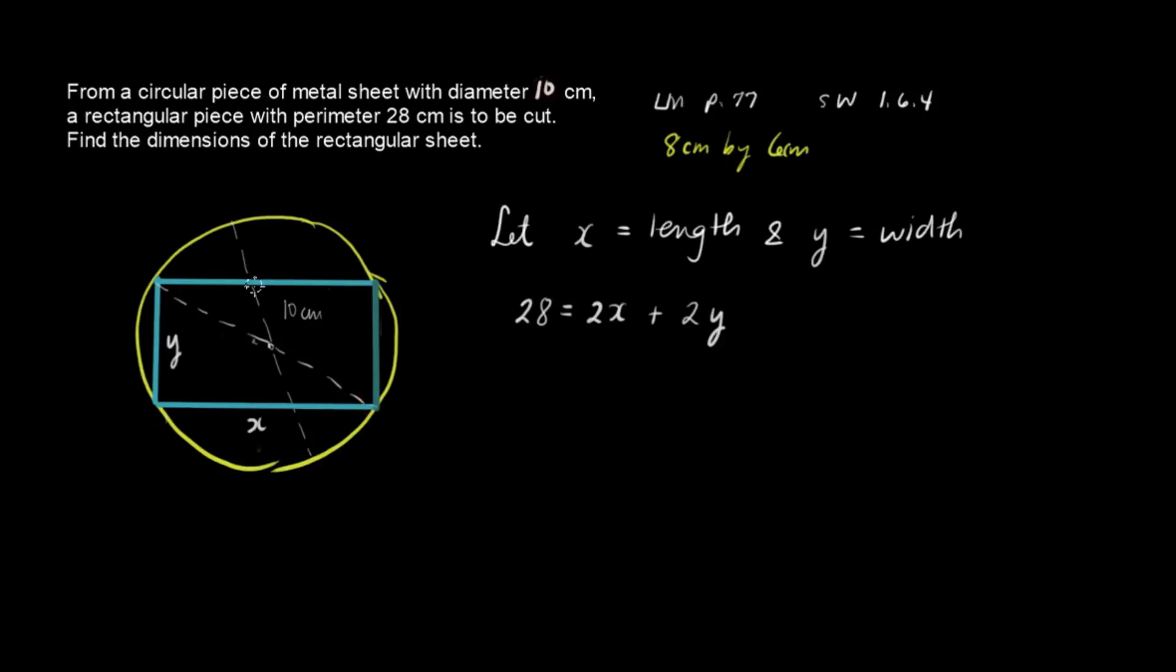Obviously, the diameter is equal to the diagonal of the rectangular sheet. And the rectangular sheet forms a 90 degree angle, because it's a rectangle. So we can form a right triangle over here.